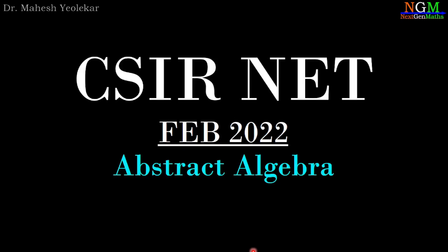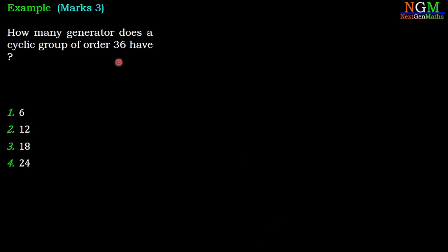In this video we are going to discuss the problem of CSIR NET February 2022, problem of abstract algebra. Question is: how many generators does a cyclic group of order 36 have?